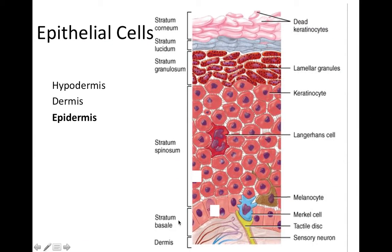It starts with the basal layer. Basal cells are at the very base — the basement membrane, the very base of the stack of live cells. Basal cells are beautiful baby cells: they have ripe, juicy, round nuclei, they're fairly uniform in shape and size, and their cytoplasm is fairly small and concise. It's really common for them to clump together and to be in sheets when looking at them on a slide. Basal cells are technically also keratinocytes.